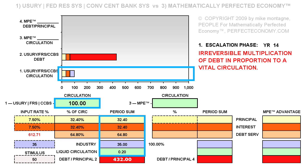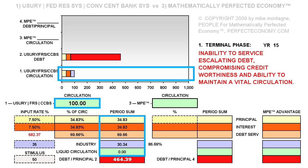And then to year 15, where once again the escalating sum of debt marginalizes the solubility of commerce, and we have to reduce interest rates yet again. Again there is no remaining liquid circulation. The primary obligation of servicing the multiplying sum of debt again encroaches on the ability to sustain vital industry, and so the remaining limping industry expires under deprivation of a sufficient portion of the circulation which can be dedicated to sustaining it.